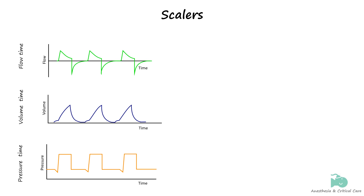Scalars on conventional mechanical ventilators are representations of specific respiratory parameters over time. The three scalars commonly utilized are volume, pressure, or flow plotted on the vertical y-axis against time plotted on the horizontal x-axis. Pressure and flow are measured values, while the volume of each breath is a calculated value. Each scalar represents the entire breath from the beginning of inspiration to the end of expiration.